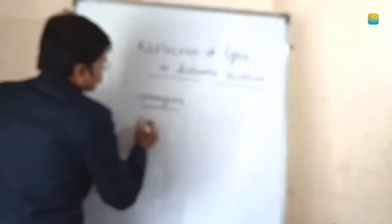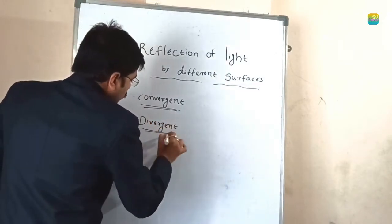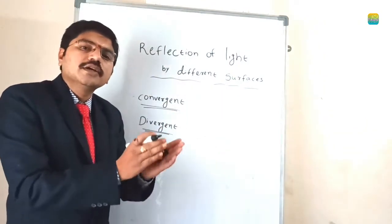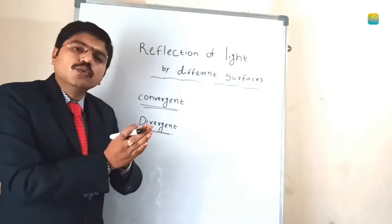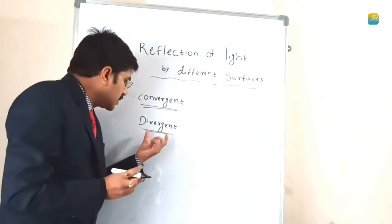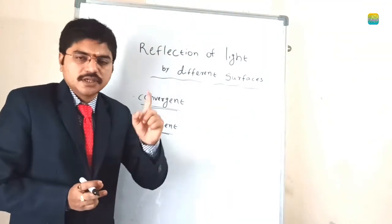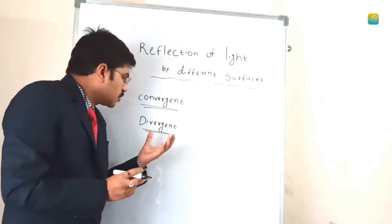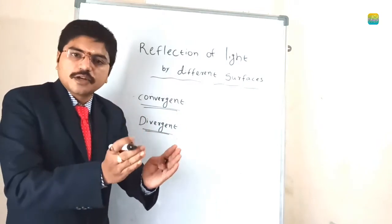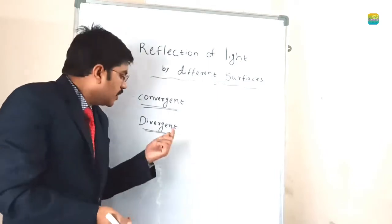Now we will go for divergent. Divergent means after reflection, if any ray is ready to move in all directions of light and does not meet at one place, then it is said to be divergent. Convergent is when after reflection the rays meet at one place. Divergent is when after reflection the rays do not meet at one place and go in all directions — that is divergent.